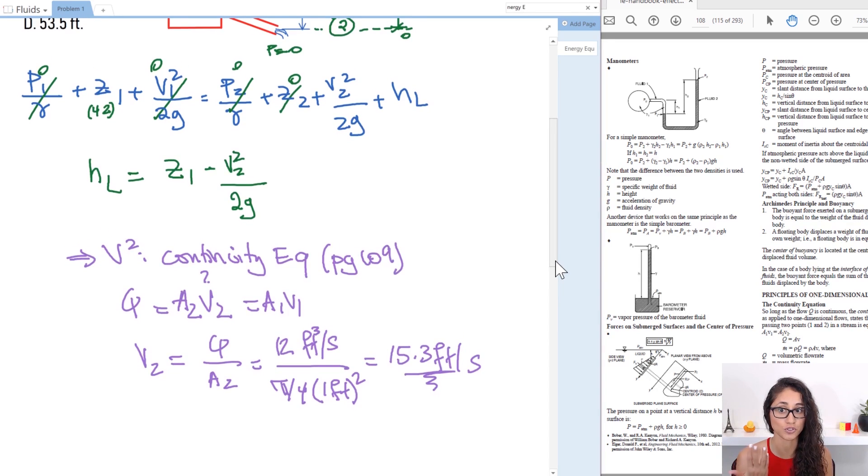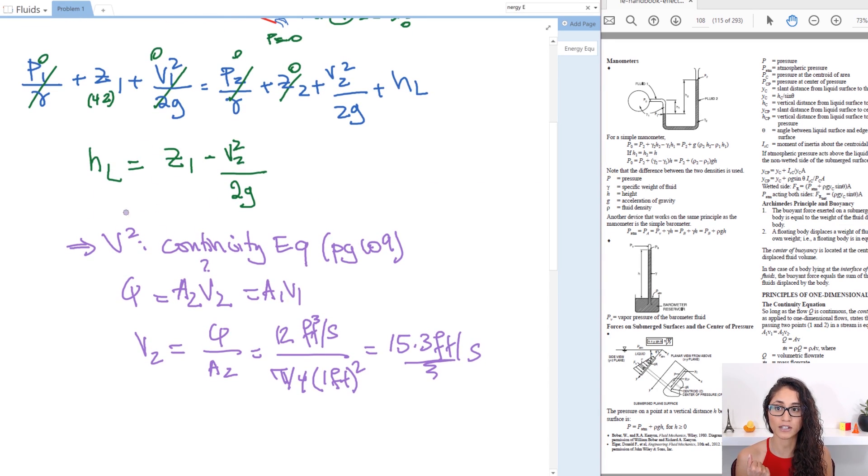Okay so if we go back to this equation then we can plug in 42 feet for Z1 then we have minus V squared which is 15.3 feet per second and this whole term is going to be squared now divide that by 2 times 32.2 feet per second squared because that's the unit for gravity or acceleration. Now feet squared with feet cancels out you're left with feet and then second squared with second squared cancels out which gives you the unit feet which is good that's what we need because we want to do 42 feet minus a term in feet. Okay so if you plug this in you will get an answer of 38.4 feet and so that should be answer A.